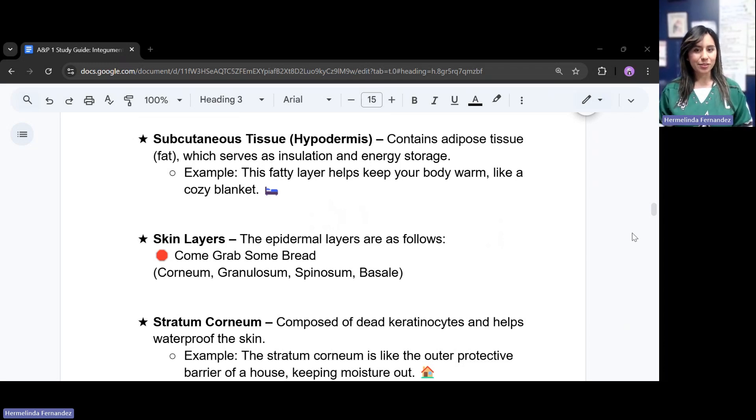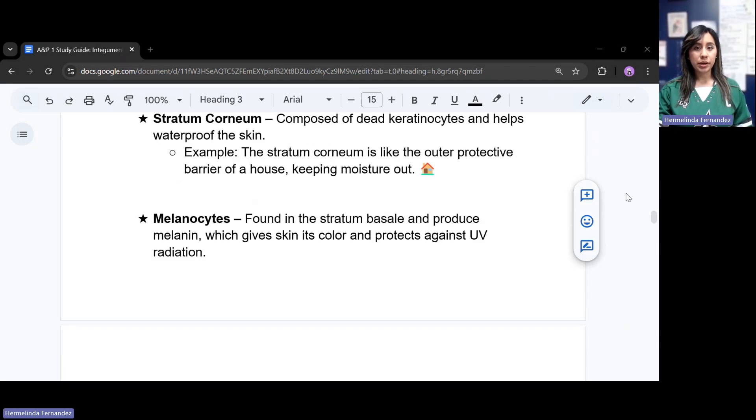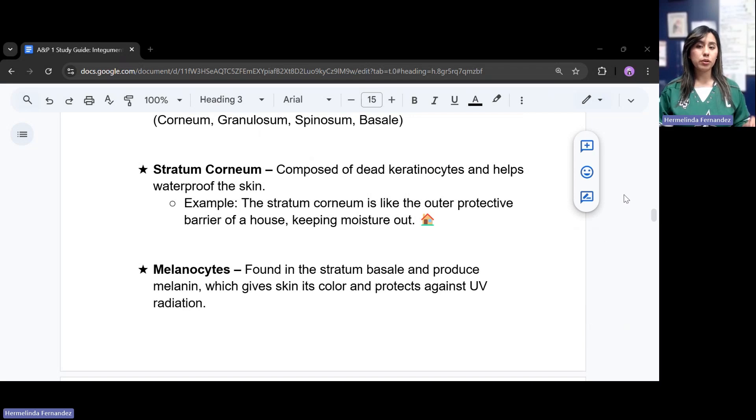And now our skin layer. So we have the epidermal layers, the mnemonic for this would be come grab some bread: corneum, granulosum, spinosum, and then basali. The stratum corneum is composed of dead keratinocytes that help waterproof the skin. The stratum corneum is like the outer protective barrier of the house. This is what keeps all that moisture out. Think of a house, you have those shingles that protect it whenever it rains and doesn't let any of that water come in.